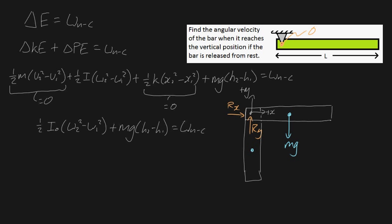Now it becomes a matter of solving for ω2. I'm choosing the initial horizontal position as state 1, and the vertical position as state 2 — so we're finding the angular velocity at state 2. The work done by non-conservative forces is going to be equal to zero, because Rx and Ry do no work — they act on the pin, and the pin doesn't move, therefore there's no work done by these forces.